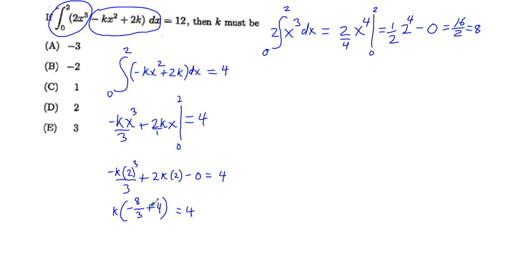And so I'm going to work to the right. k times, we're going to have negative 8 thirds. 12 thirds and how many thirds do we have in 4? 12 thirds is equal to 4. And continue to work to the right. Negative 8 thirds plus 12 thirds, that's going to be k times 4 thirds is equal to 4.